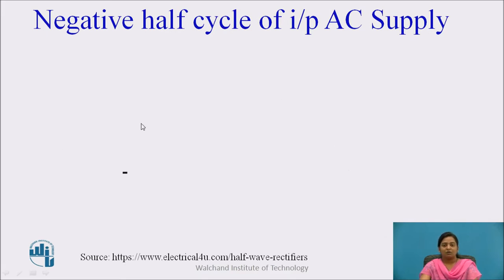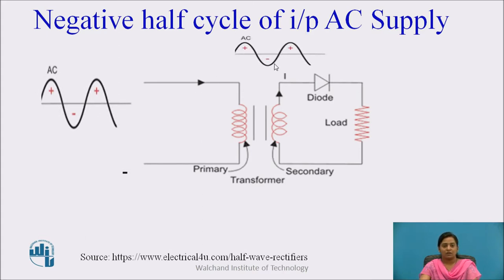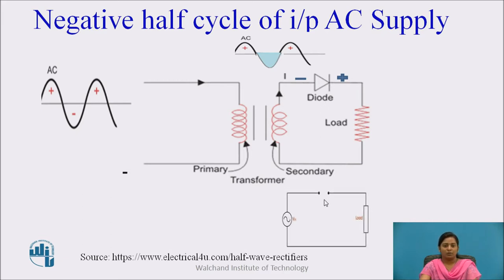During the negative half cycle of the input AC supply, the voltage at the secondary decreases in level. The negative voltage is applied to the anode of the diode and positive voltage is applied to the cathode. In this condition, the diode acts as an open switch. So the current flowing through the load is 0, and the output current during the negative half cycle is 0.